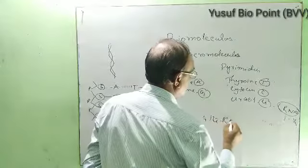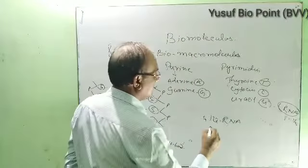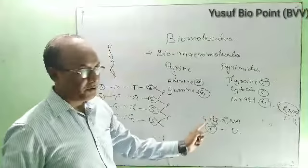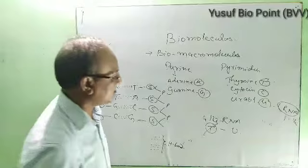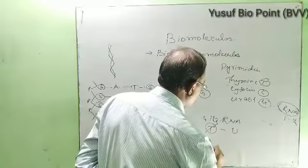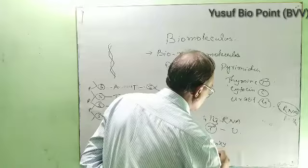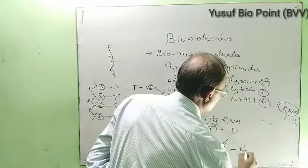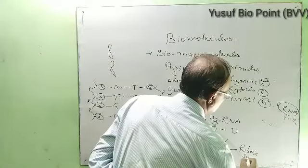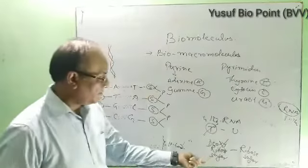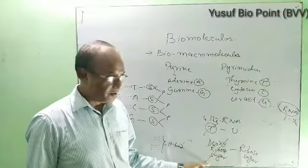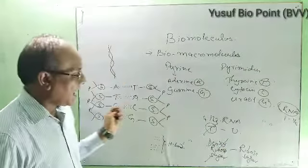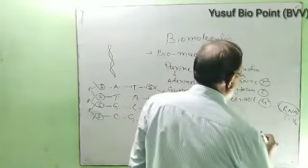In ribonucleic acid, in place of thymine, there is uracil. In the RNA, in place of thymine, there is uracil. And in place of deoxyribose sugar, ribose sugar is found in the case of ribonucleic acid. Second, RNA is a single-stranded structure.